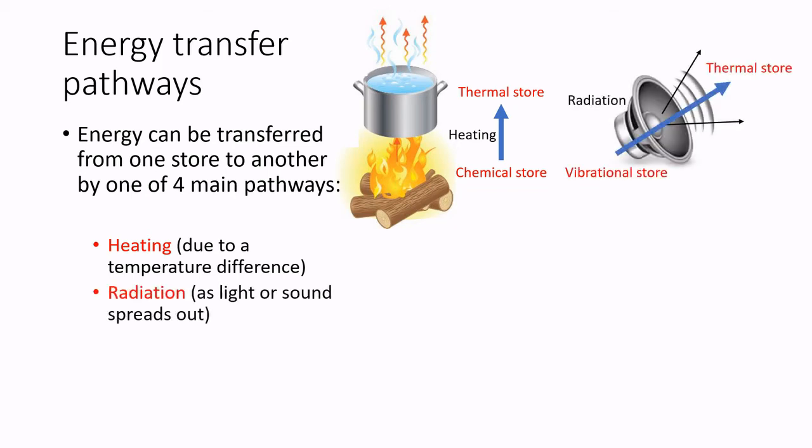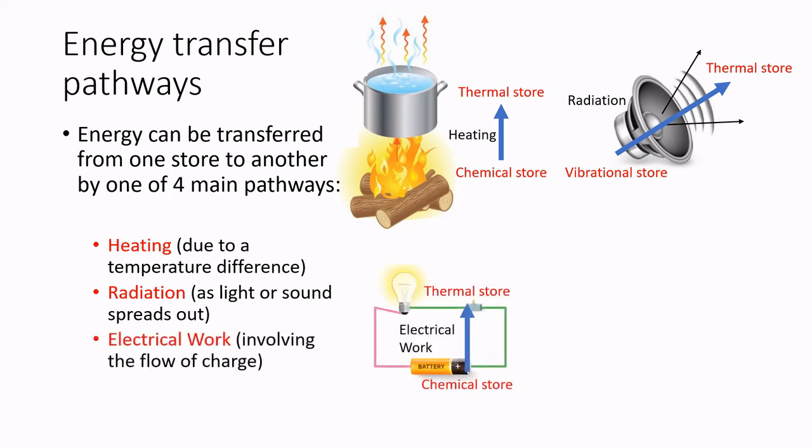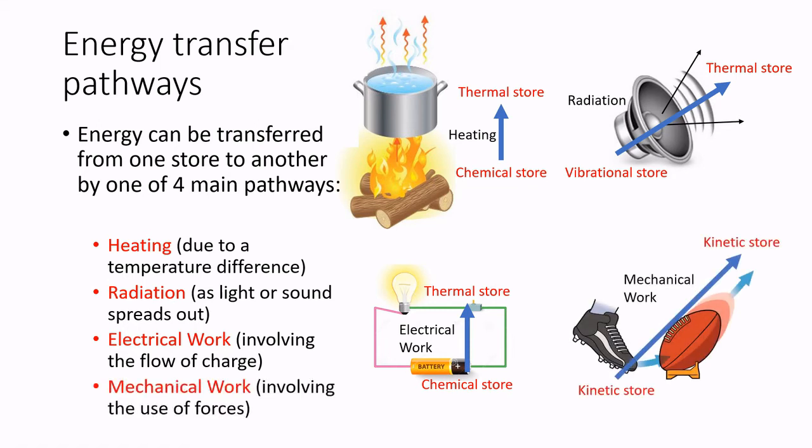Then we have the radiation pathway. A vibrating object or an oscillating electromagnetic field will radiate sound or light out in all directions. It will eventually be absorbed into the surroundings, causing their temperature to rise slightly. Electrical work is done by the movement of charged electrons carrying energy through an electrical circuit from the chemical store in the cell to the thermal store in the lamp. Mechanical work is done by forces, as they cause objects to move or change their motion.